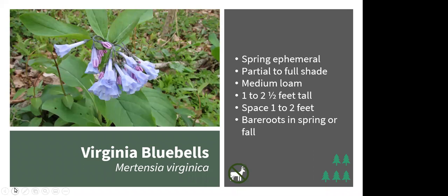Virginia bluebells is a spring ephemeral that spreads over time to form colonies. It prefers partial to full shade, tolerates slightly wet medium soil, and likes loam. Plants grow 1–2 feet tall and the foliage dies off by midsummer. Plant bare roots in spring or fall. It can do okay in clay, and is generally deer resistant, though porous or clay soils may reduce its ability to spread. It's visited by long-tongued bees and provides wildlife cover in large colonies.